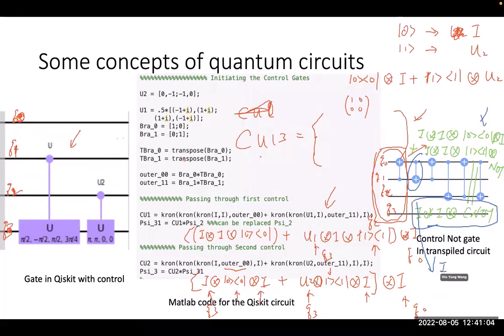I tensor product I, tensor product I, tensor product I, no, no, not outer one, one, gate matrix for X. And then a tensor product of Outer 1-1. That's it.